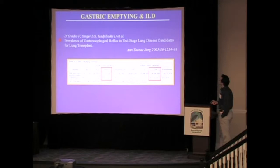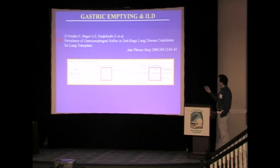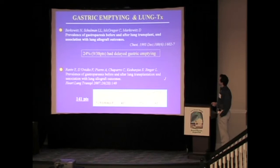Looking at the prevalence of delayed gastric emptying in interstitial lung disease: in a paper we published from Toronto on gastroesophageal reflux in end-stage lung disease candidates for lung transplant, we identified that 46% of patients with idiopathic pulmonary fibrosis had prolonged gastric emptying for solids and 20% for liquids. In the lung transplant population, this was initially investigated by Dr. Berkowitz in 1995, who identified that 24% of their cohort had delayed gastric emptying.